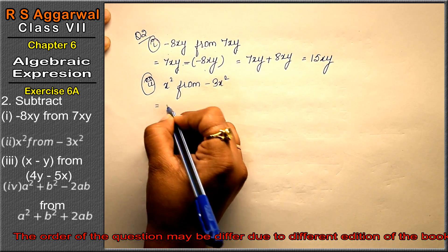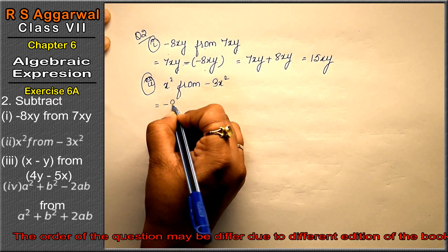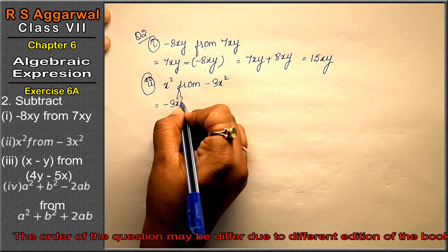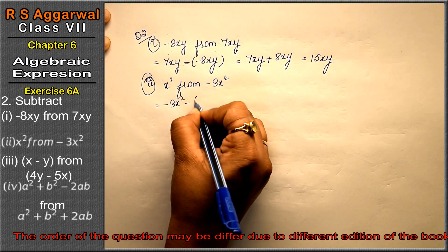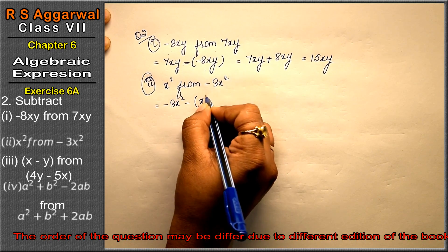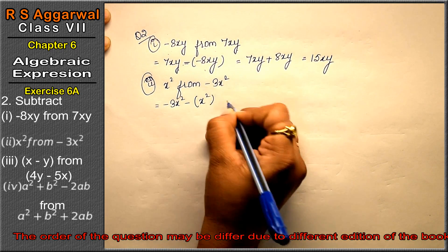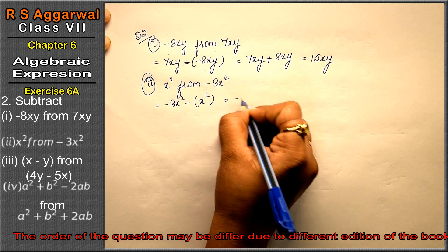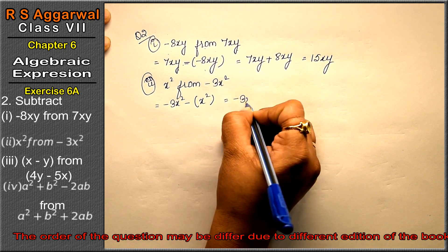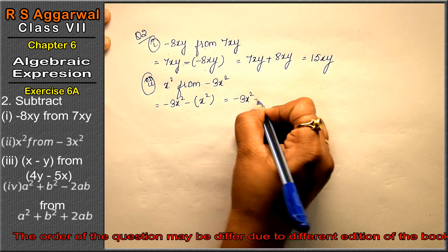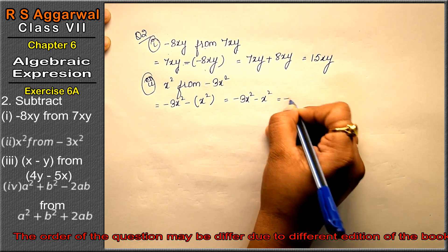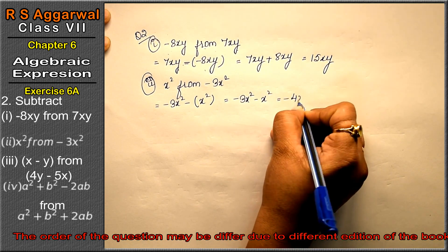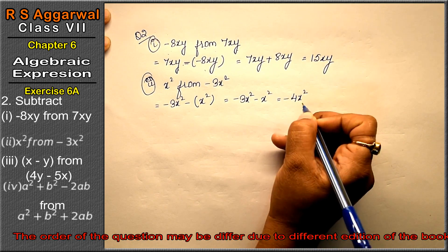Let's do the second part. Second part is: subtract x² from -3x². The digit after 'from' is -3x², so: -3x² minus x², that is -4x² is the answer.